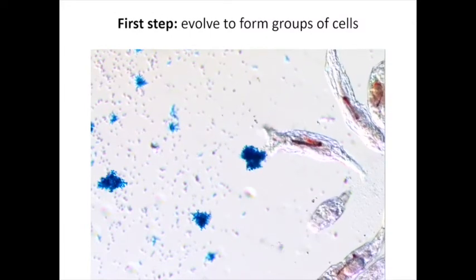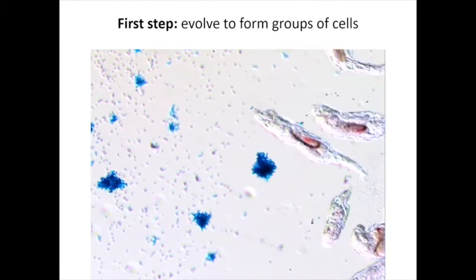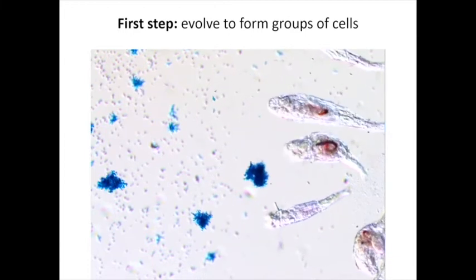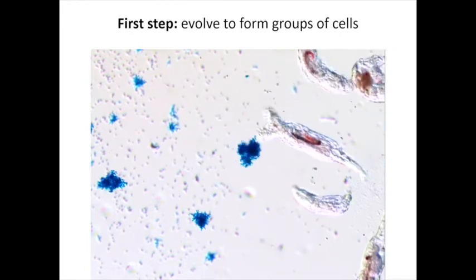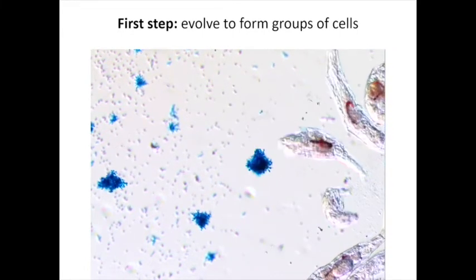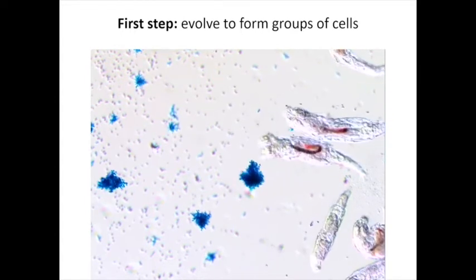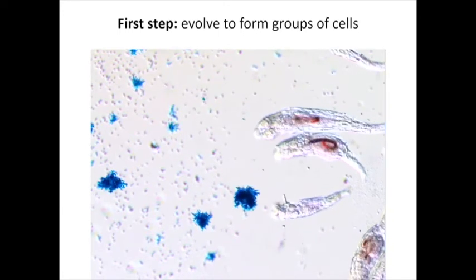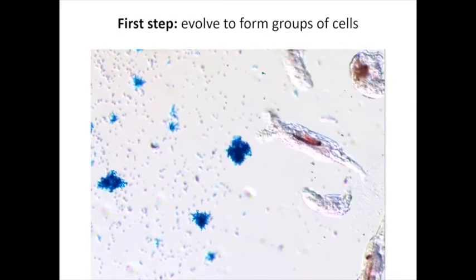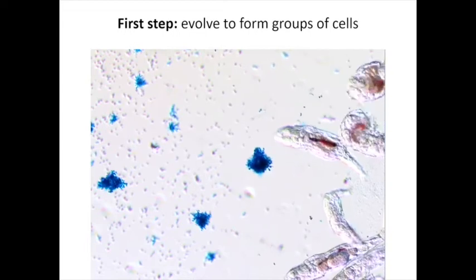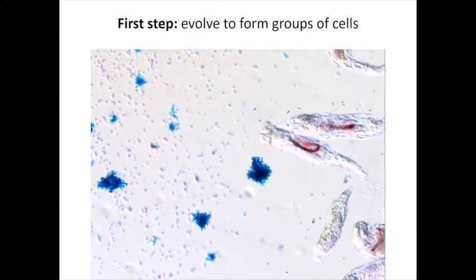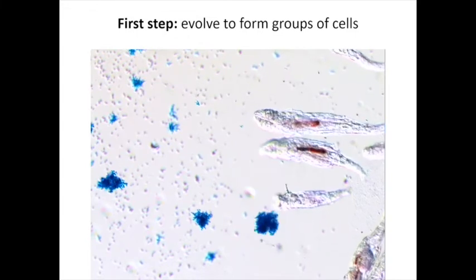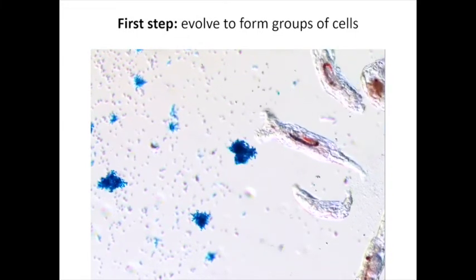The first step in evolving multicellularity is just getting clumps of cells from a single-celled ancestor. There's lots of ways this could occur. The plausible story that everyone accepts is that predation can be a strong driver in the evolution of simple multicellular groups. Here we're using a rotifer, a small animal that's already multicellular. We fed them a mixture of red-labeled single-celled yeast and blue-labeled snowflake yeast. You can see they're munching down on the red ones and ignoring the blue ones. We actually developed this as part of a high school outreach kit.